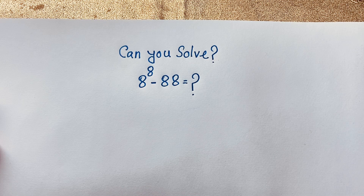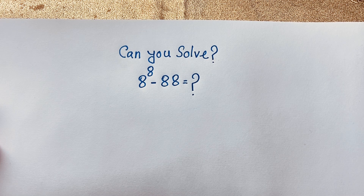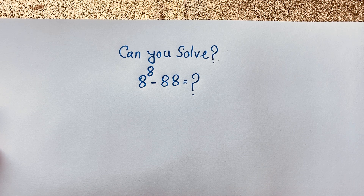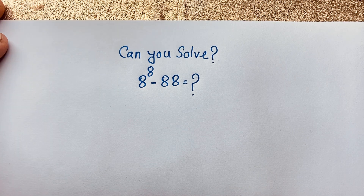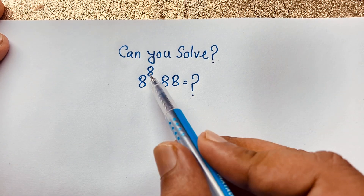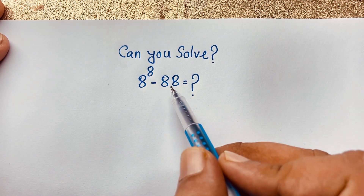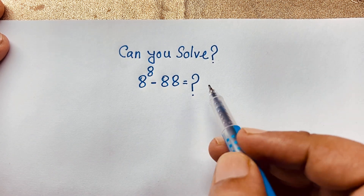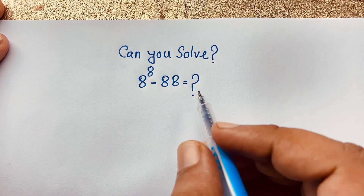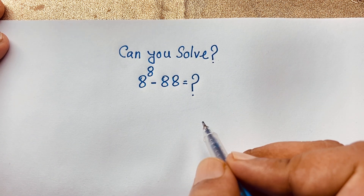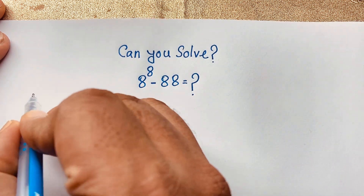Hello everyone, welcome to Rasta's classroom. Today we have solved an interesting math Olympiad question. We have solved this question without a calculator. Our question is 8 to the power 8 minus 88 is equal to what? How to solve this interesting math Olympiad question.